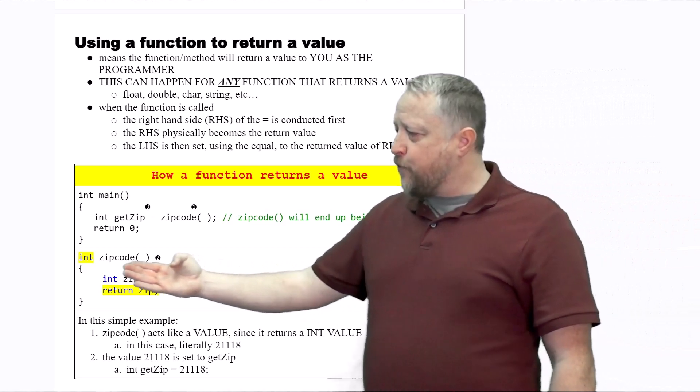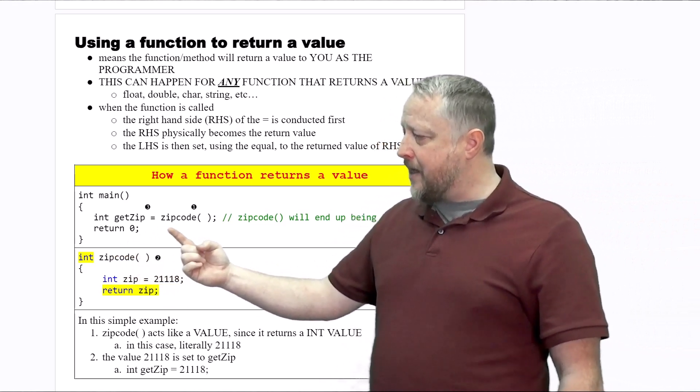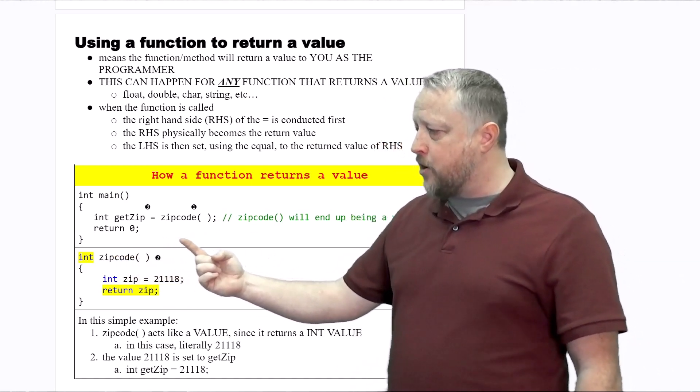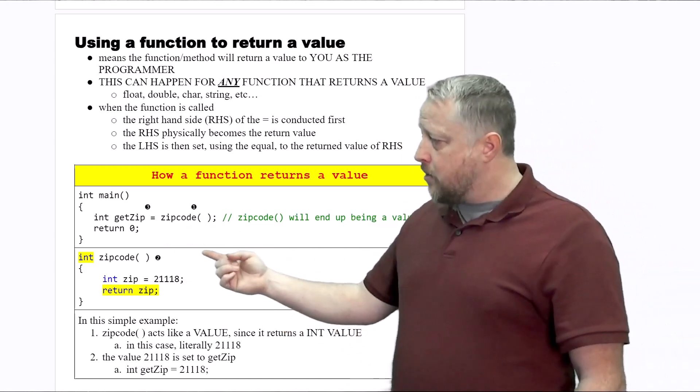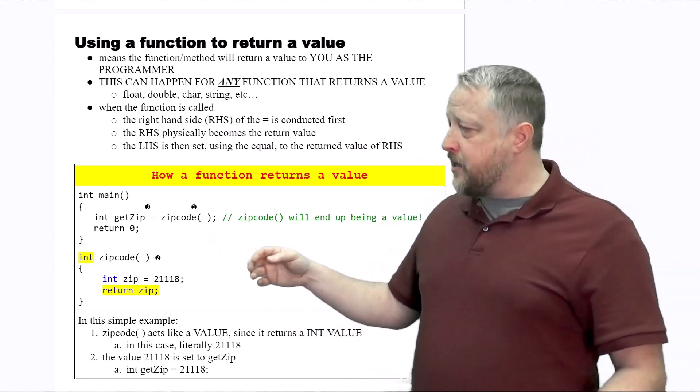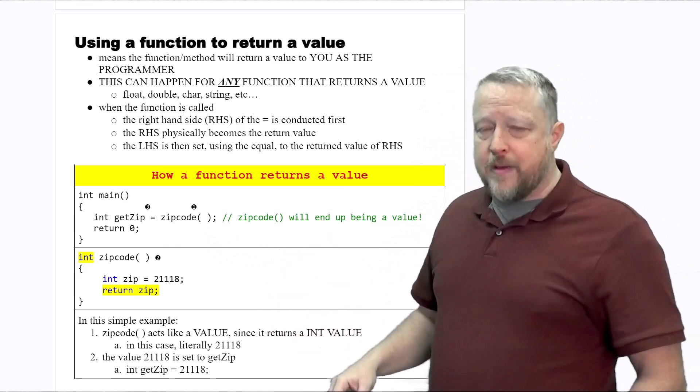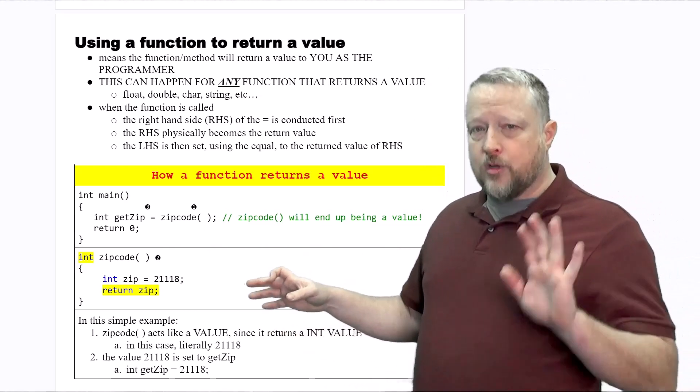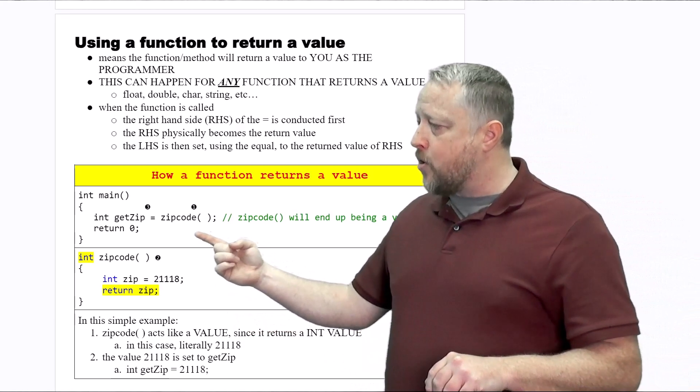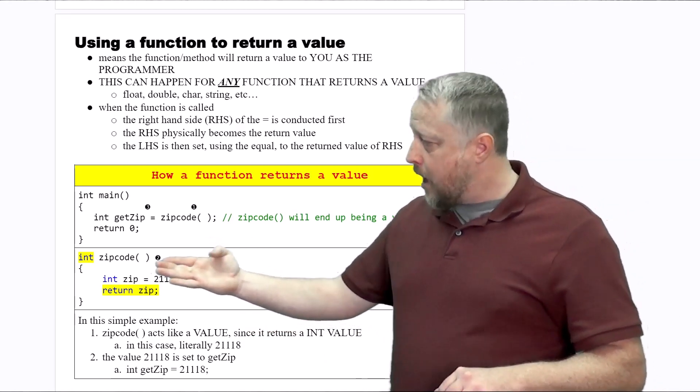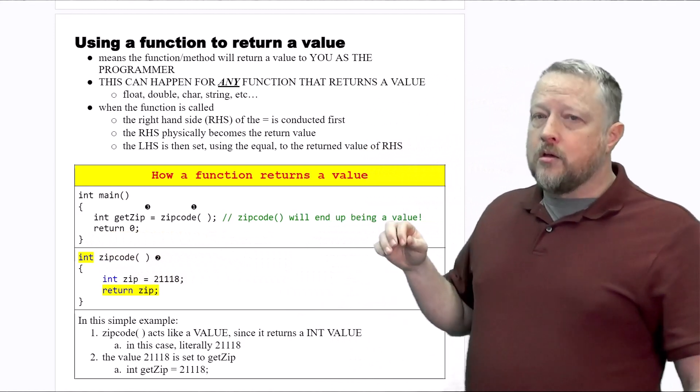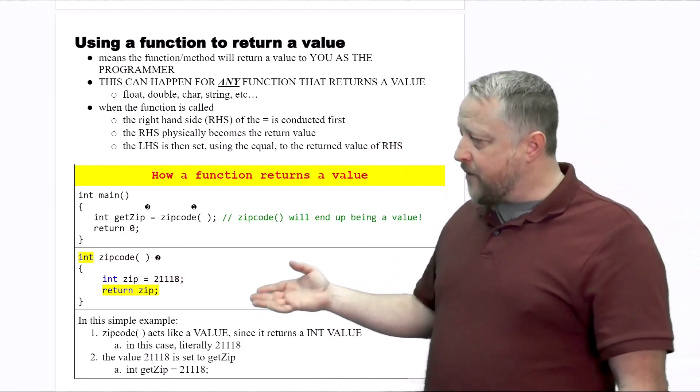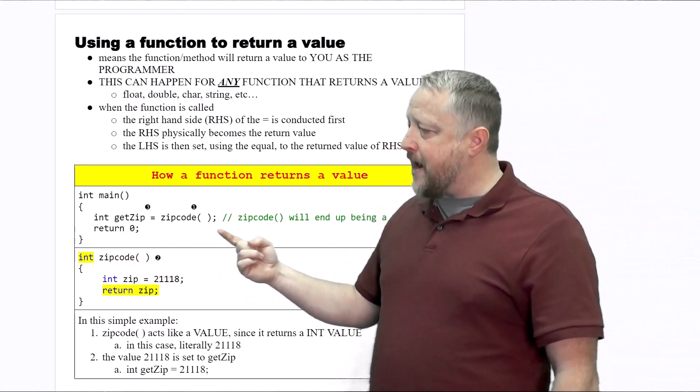What you're going to see is that if we have an equal sign and then our function call—notice it's a function call because we have parentheses behind it. The logistics doesn't matter if we're worried about what's inside parentheses or not. As you may recall, whenever we see the equal sign, the right hand side is going to be done first.